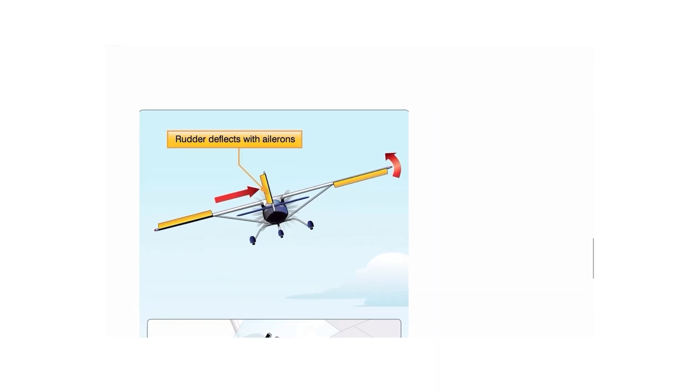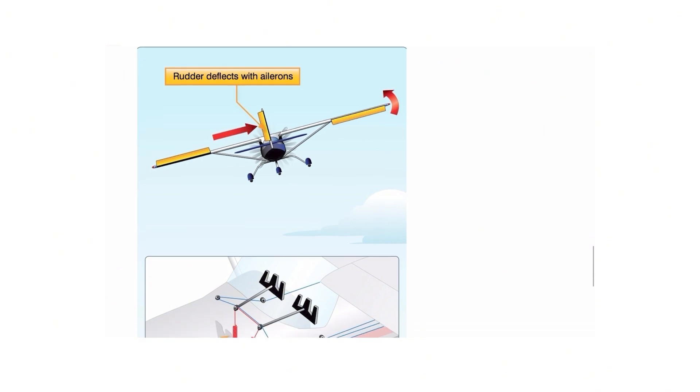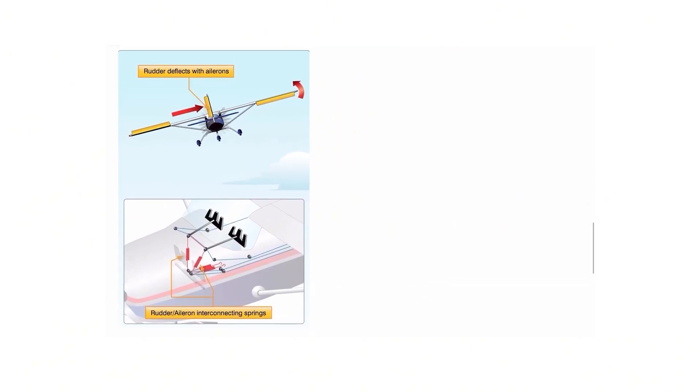All right, last of all, what we have is rudder-aileron interconnect. With rudder-aileron interconnect, when we bank an airplane, in this case, we're banking the airplane to the left, we see this aileron going down, this aileron going up, and the plane's banking to the left, and we as pilots need to put in left rudder.